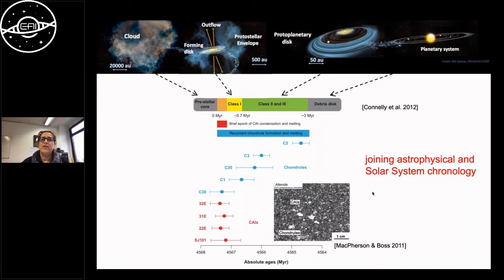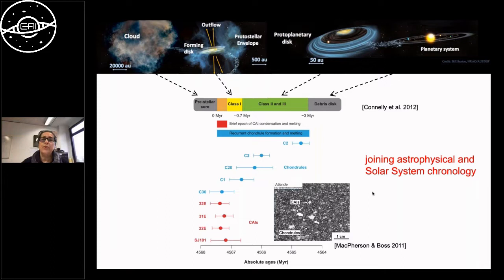Outflows help disperse any remnant cloud material, and we end up with an isolated planet-forming disk around a young newborn star — what we call in astrophysical terms a class II system. As time goes on we end up with a more mature planetary system that has very little gas left to build more planets or atmospheres.